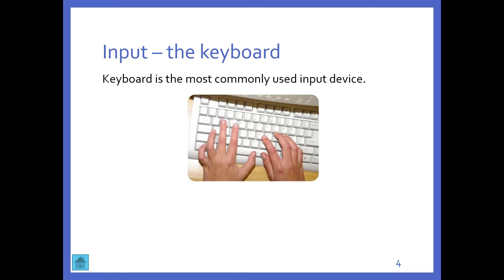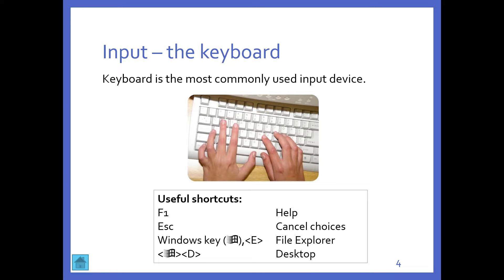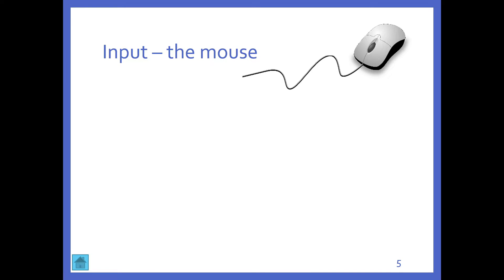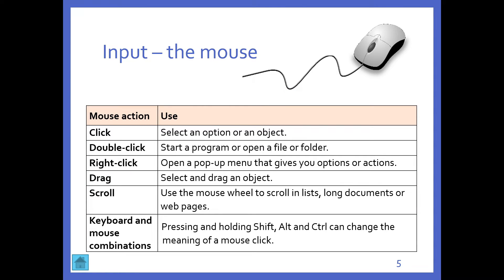Let's look at some of the input devices. The first one is the keyboard, which is the most commonly used input device. There are a couple of shortcuts — we can see someone typing on what looks like a very old keyboard. Most of us know that keyboard layout from our smartphones. We've also got the mouse, which has different options. Keyboard and mouse — we use them to give instructions to the computer.